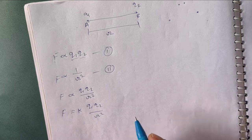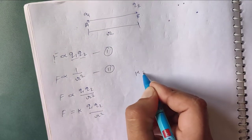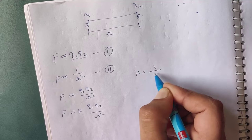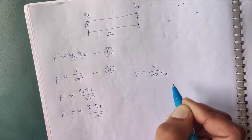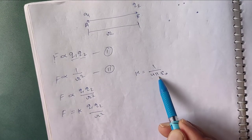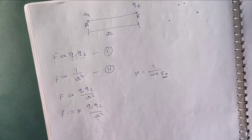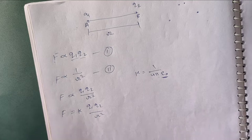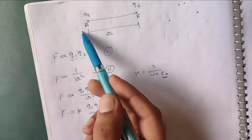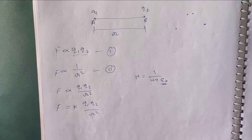In the SI system of units, K is written as 1 over 4πε₀. Here 4 is a constant, π is a constant, and ε₀ is the absolute permittivity of free space or vacuum, because we are considering the two charges placed in free space or in vacuum.